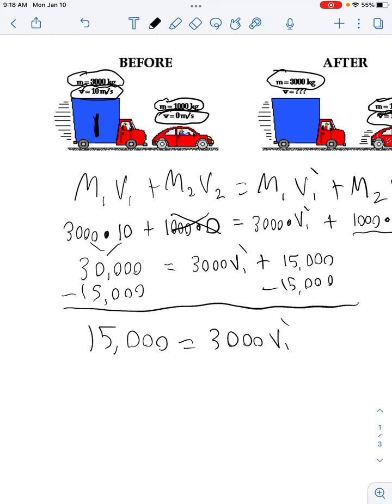All right, we're close. We got to get V1 prime by itself. How do we do that? We divide this side by 3,000. Whatever we do on the right side, we must do on the left. Divide this side by 3,000. These cancel each other out. V1 prime is officially by itself. Equal sign drops. 15,000 divided by 3,000 should give you 5 meters per second as your answer. We showed our work. We used our units. We circled our answer. We're good.